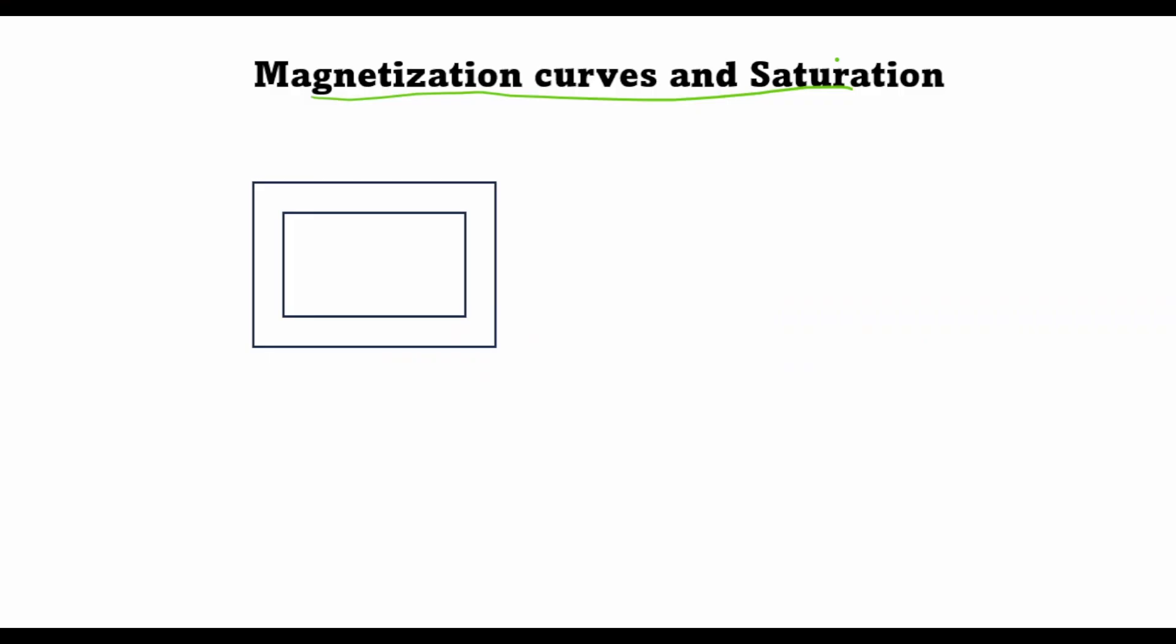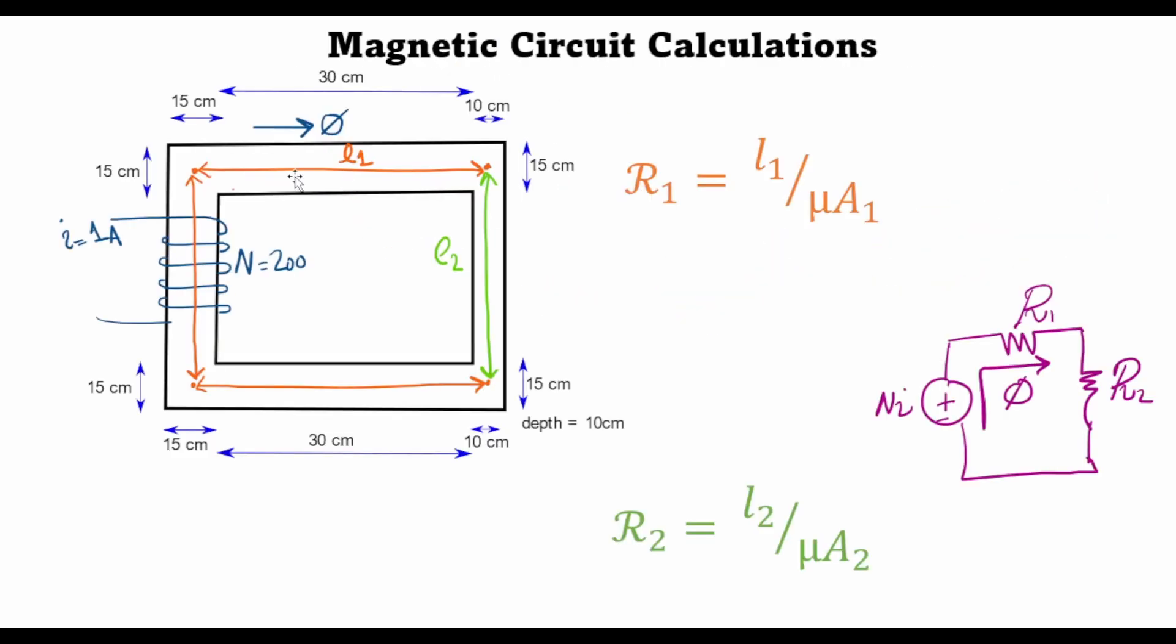In my previous lecture we solved a problem in which we found out the magnetic flux through a ferromagnetic core using the magnetic circuit equivalence. That is, we made an electrical circuit equivalent of a given magnetic geometry and found out the flux through the circuit.